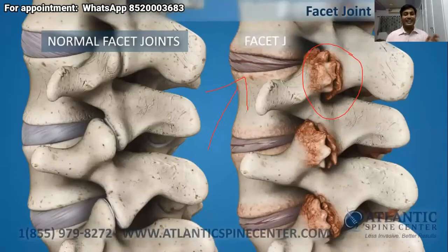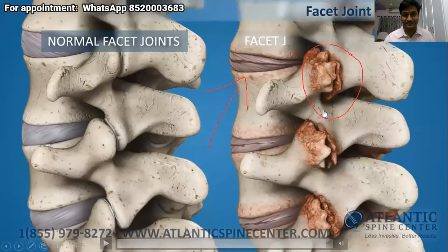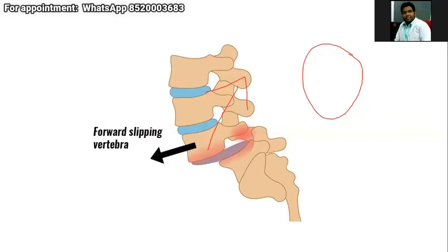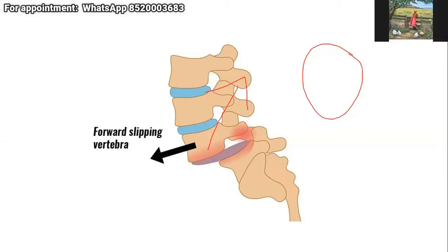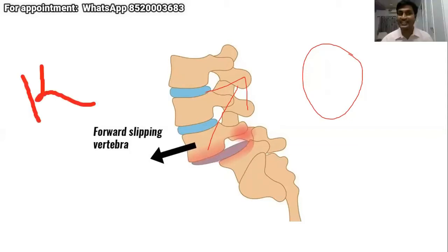Moving to case discussions, the instructor notes there are doubts from participants. Dr. Fayaz asks how flexion causes injury. The instructor restates that intradiscal pressure is maximum in flexion, and repetitive flexion causes repeated increases in intradiscal pressure, leading to disc dehydration and damage.